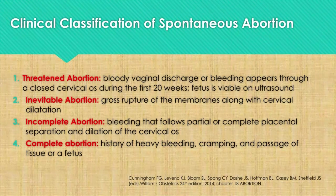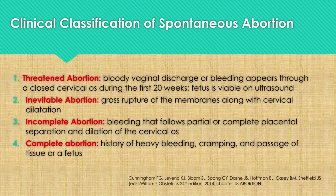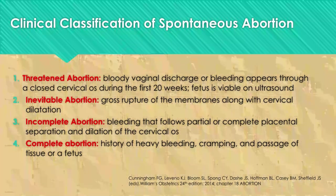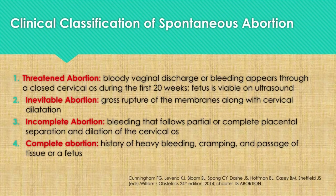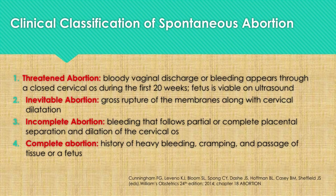Threatened abortion is when the patient manifests with bloody vaginal discharge or bleeding that appears through a closed cervical os during the first 20 weeks. The fetus is viable on ultrasound, the cervix is closed, and the uterus is compatible with age of gestation. Inevitable abortion is when a patient experiences gross rupture of the membranes along with cervical dilatation. Incomplete abortion is when a patient bleeds following partial or complete placental separation and dilatation of the cervical os, with history of heavy bleeding and passage of meaty tissues, cramping, and on ultrasound there is little or no placental or products of conception remaining.